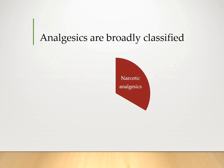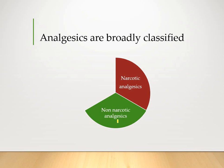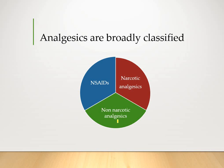Analgesics are broadly classified as narcotic analgesics, where the prototype drug is morphine, and then there are non-narcotic analgesics where the prototype drug is paracetamol, or phenacetin as a second option, and then there are non-steroidal anti-inflammatory drugs, as we referred to earlier, and the prototype drug is aspirin. So aspirin represents the non-steroidal anti-inflammatory drugs.